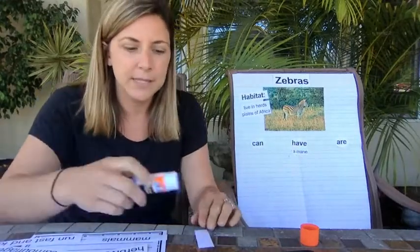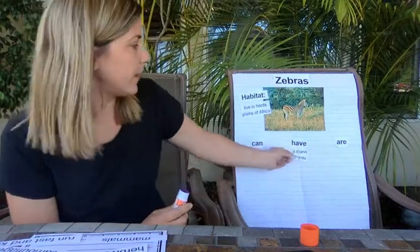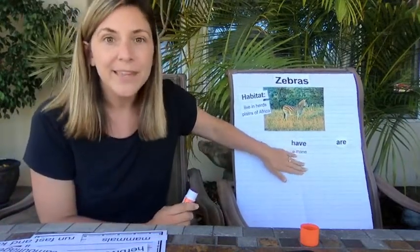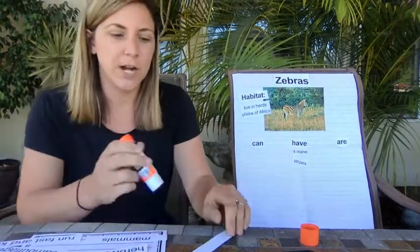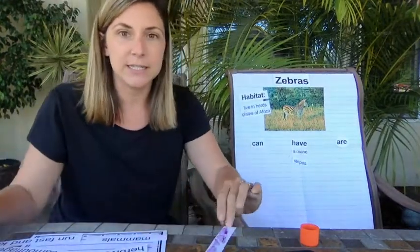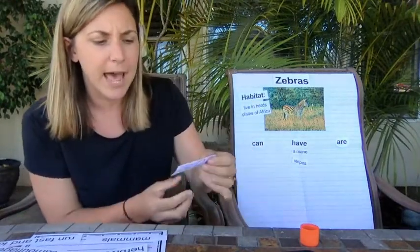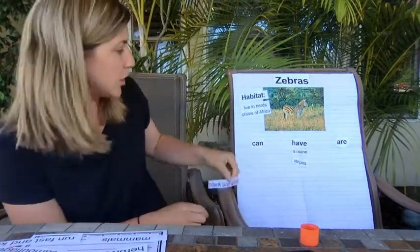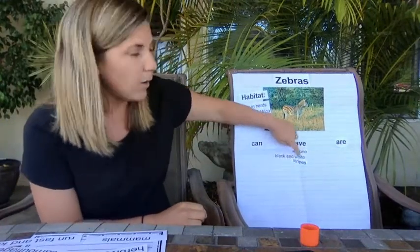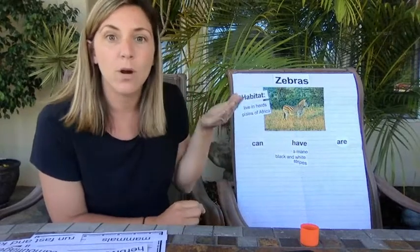Zebras have stripes — black and white stripes. This week we can focus on making our sentences a little bit stronger and more detailed. You can say that zebras have black and white stripes. So right here where it says stripes, I'm going to put 'black and white stripes' so I can remember to make that more detailed.